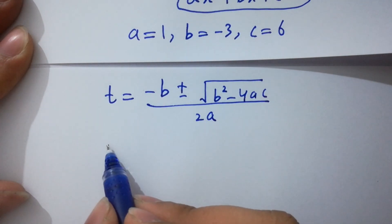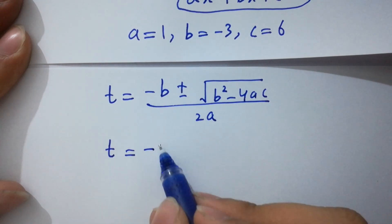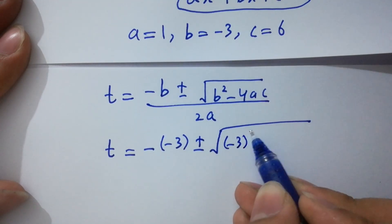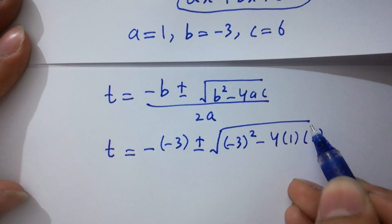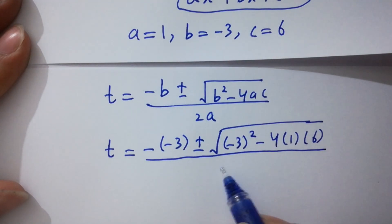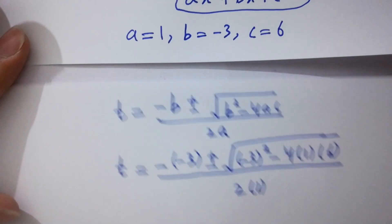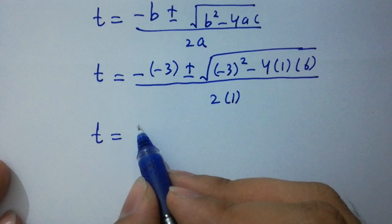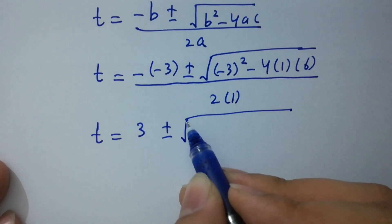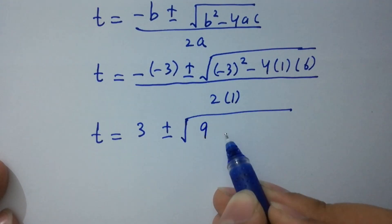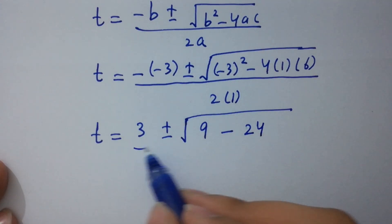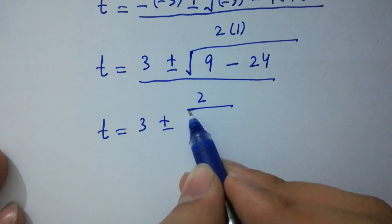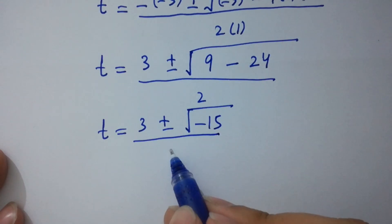Substituting the values: t equals minus of minus 3 plus or minus square root of minus 3 squared minus 4 times 1 times 6, over 2 times 1. Simplifying: t equals 3 plus or minus square root of 9 minus 24 over 2, which gives t equals 3 plus or minus square root of minus 15 over 2.